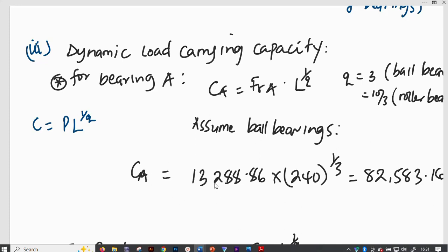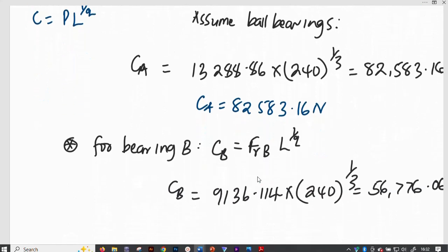So if we consider for bearing A, CA is equal to the equivalent radial load times the million revolutions, then this will be times 240 to power 1 out of 3, and this gives us CA equal to 82,583.16 Newtons. So that is the dynamic load carrying capacity of bearing A.